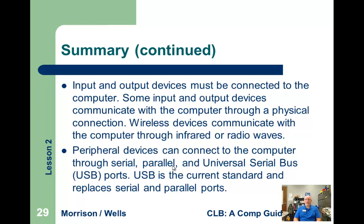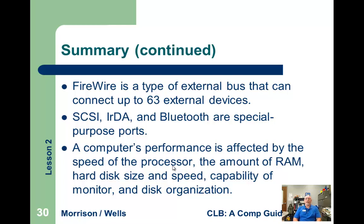Those old serial and parallel cables were really big. FireWire can have up to 63 external devices and it's very fast. SCSI, infrared, and Bluetooth are also considered special-purpose ports; Bluetooth is very common. SCSI is used where we need to transfer lots of data very quickly, but it's expensive, and many computers have just adopted USB, which seems fast enough — and you can always get FireWire for speeds comparable to SCSI. A computer's performance is affected by the speed of the processor, amount of RAM, hard disk size, speed and capability of the monitor, and disk organization. That concludes lesson two.